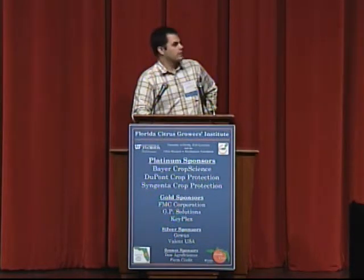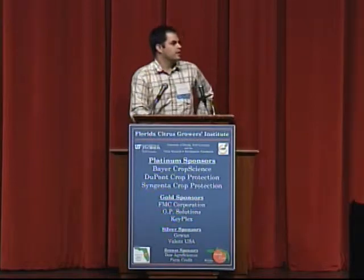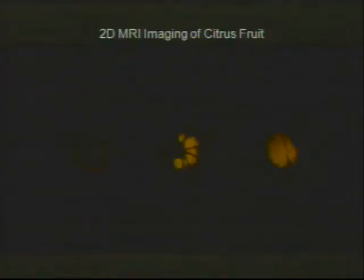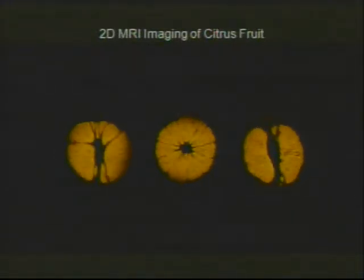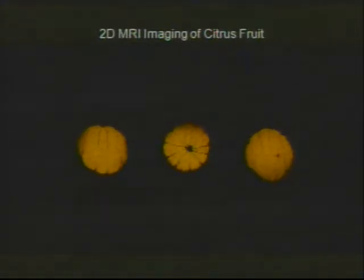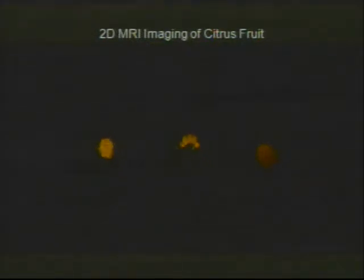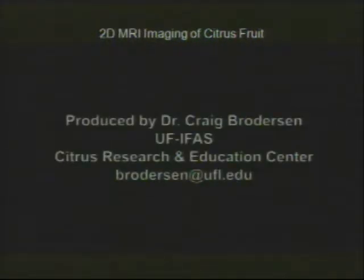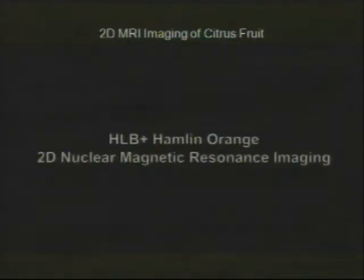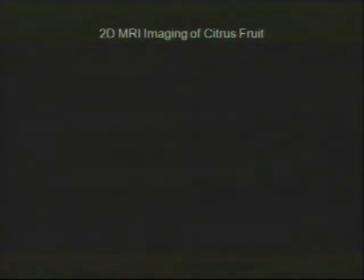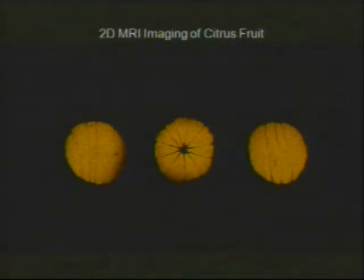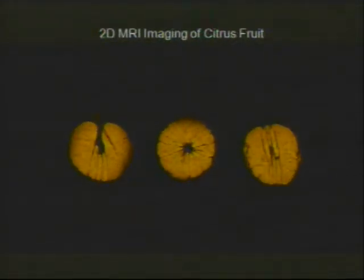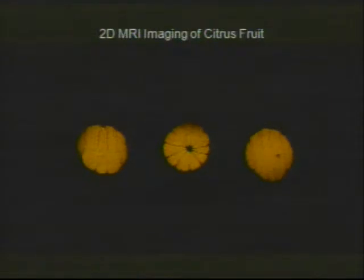This movie goes slice by slice through the HLB-infected orange. We're planning to use this to study the development of tissue. One interesting thing you can see in this movie is that the fruit is lopsided — that's one of the typical symptoms you see in HLB-infected fruit. Something is going on on one side of the fruit that is not allowing it to develop properly, whereas the other side is developing normally.